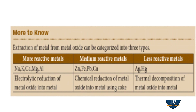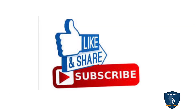The extraction of metal from metal oxide can be categorized into three types: more reactive metals (sodium, potassium, calcium, magnesium, aluminium) use electrolytic reduction; medium reactive metals (zinc, iron, lead, copper) use chemical reduction using coke; less reactive metals (silver, mercury) use thermal decomposition of metal oxide to metal. Thank you for watching. If you like, give a thumbs up, share, and subscribe to the Science EasyTech channel.